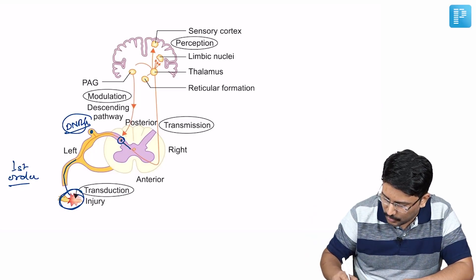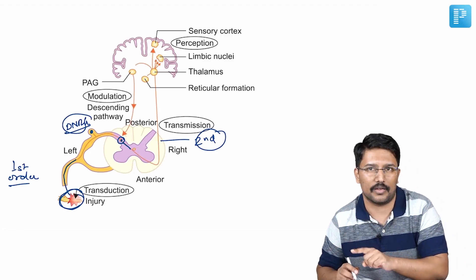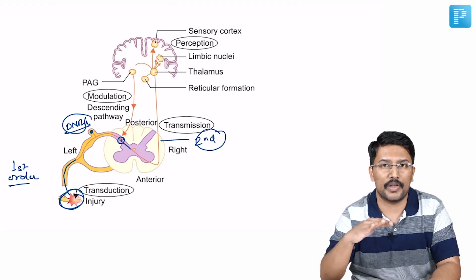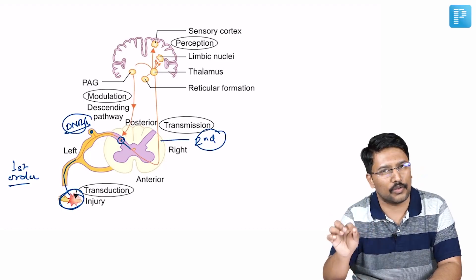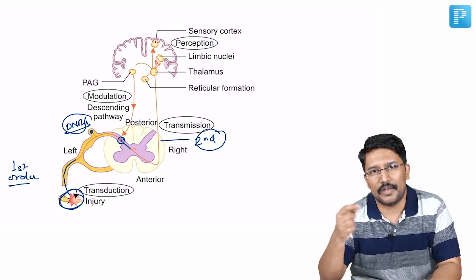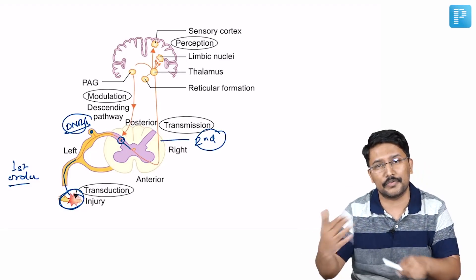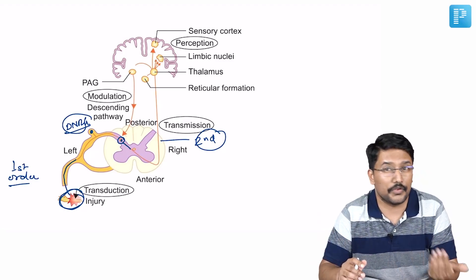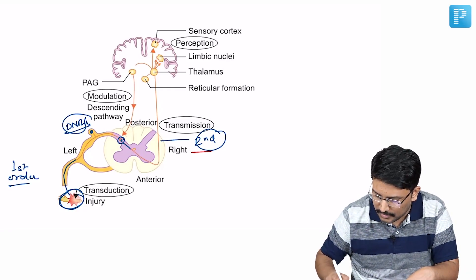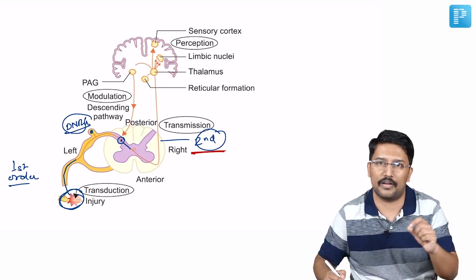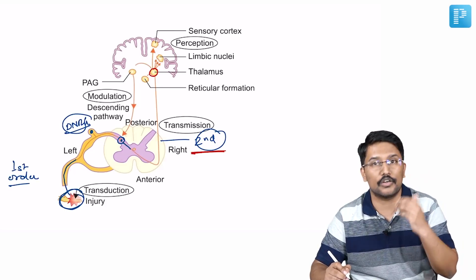From this synapse, the second order neuron originates and decussates to the opposite side immediately. So if the MCQ is asking you where decussation of pain fibers occurs, it occurs at the level of entry into the spinal cord. Unlike fine touch, pain fibers decussate immediately. That's why you get differential loss of sensation when dealing with transsection of spinal cord, like in Brown-Séquard syndrome. Then it ascends up to reach the thalamus.